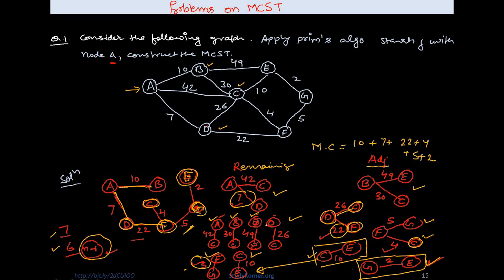You can also compute the minimum cost for this spanning tree by adding the edge weights of each considered edge. This is the complete spanning tree for this graph.